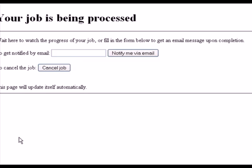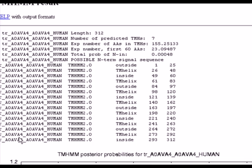We'll wait for the result page to appear. This is our result page. You can see here that the length of our protein sequence is 312. The number of predicted transmembrane helices is seven.